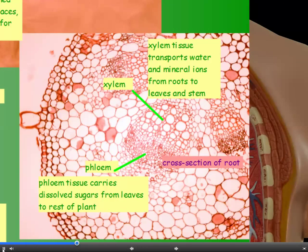Now substances are transported around the plant by xylem and phloem tissue. Xylem tissue transports water and mineral ions from the roots up to the leaves and the stem. But the phloem carries dissolved sugars. Now these sugars are the products of photosynthesis so the sugars are made in the leaves and then they're transported in the phloem to the rest of the plant. So they're going in the opposite direction to the flow in the xylem.